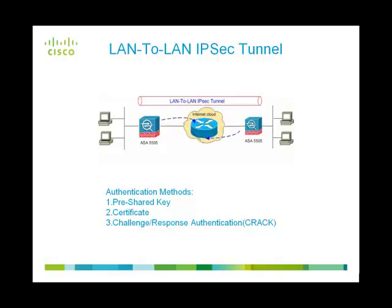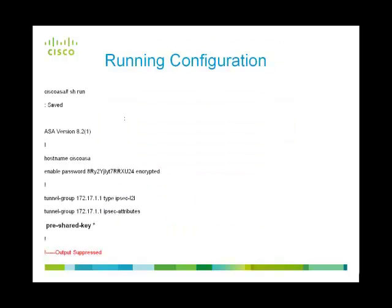We assume that we have already configured the security appliance to be an endpoint of the VPN tunnel, and we have provided a pre-shared key as the authentication parameter. Once a pre-shared key is configured, it is encrypted and you cannot see it in the running configuration in clear text format. It is displayed as asterisks. A sample running configuration is shown here.